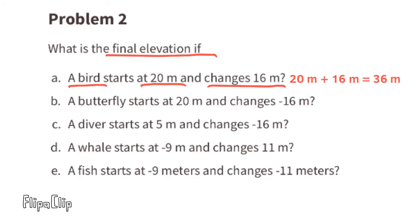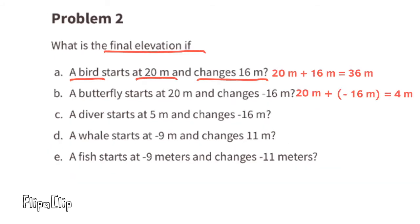Part B: a butterfly starts at 20 meters and changes negative 16 meters. We can write this as 20 meters plus negative 16 meters equals 4 meters. We can also write it as 20 meters minus 16 meters equals 4 meters. The butterfly's elevation would be 4 meters.